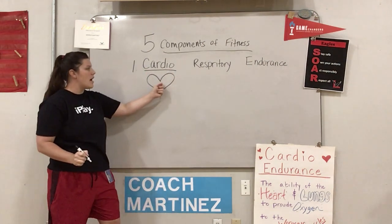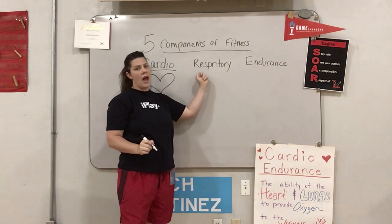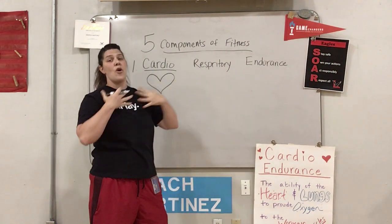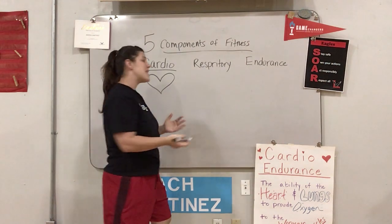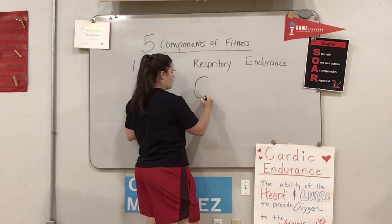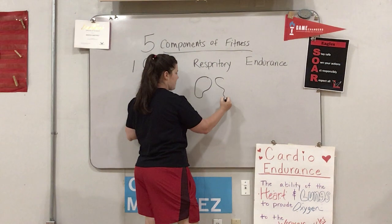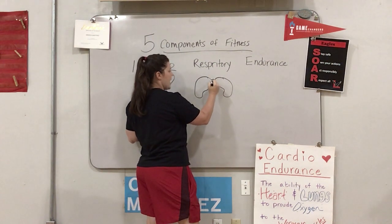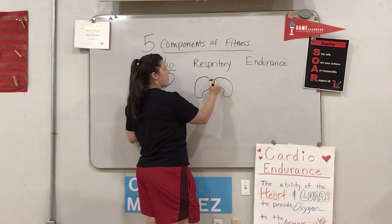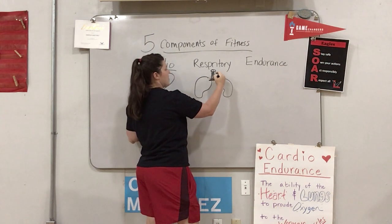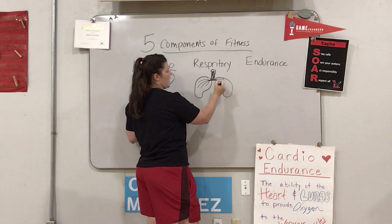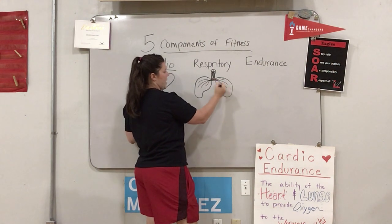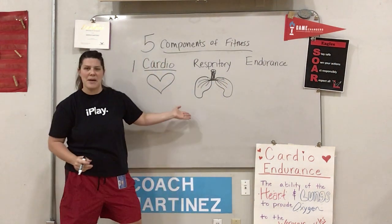Cardio means heart. Respiratory has to do with your breathing or your lungs. I'll try to draw a picture of lungs here. You kind of have a breathing tube called a trachea right there — airways — so we can breathe. The oxygen comes in and it fills up our lungs through these little branches right here. That's my best drawing.